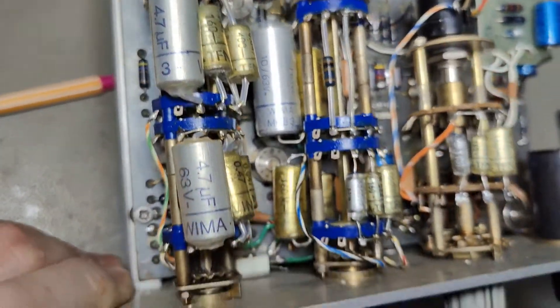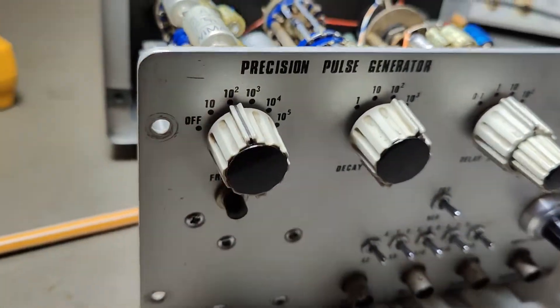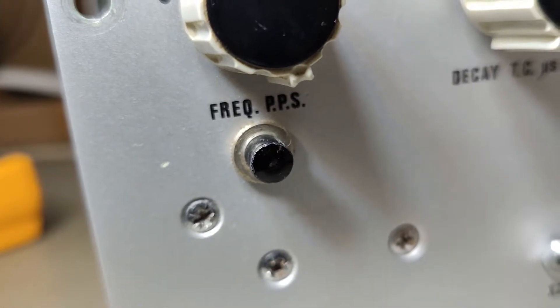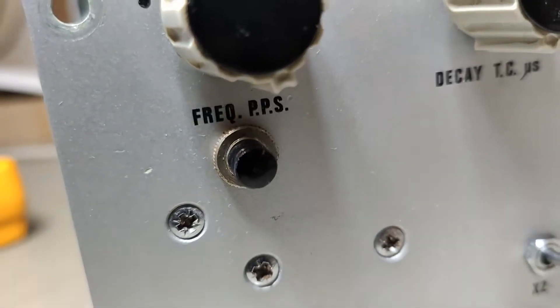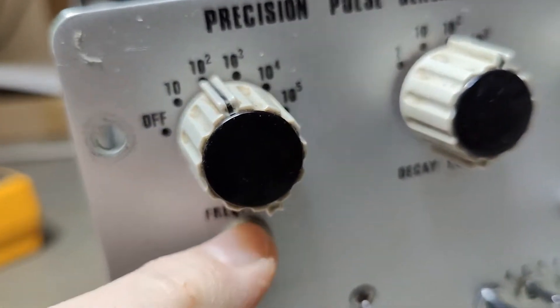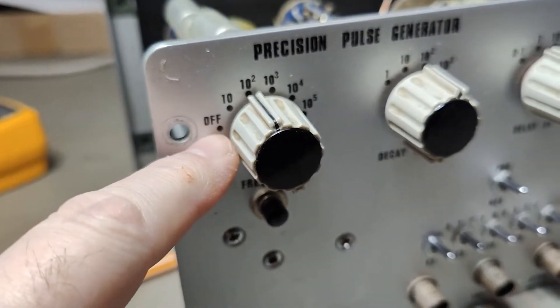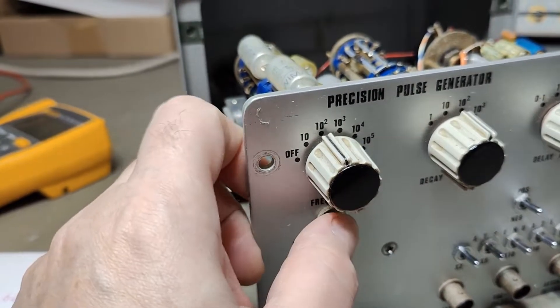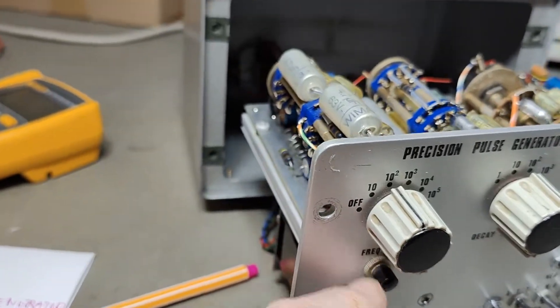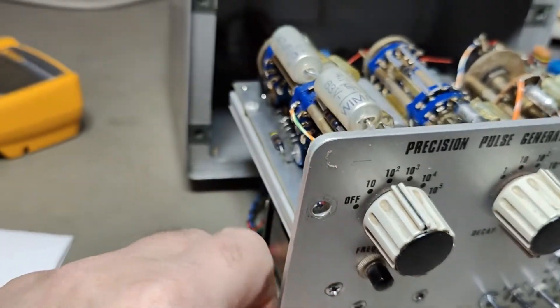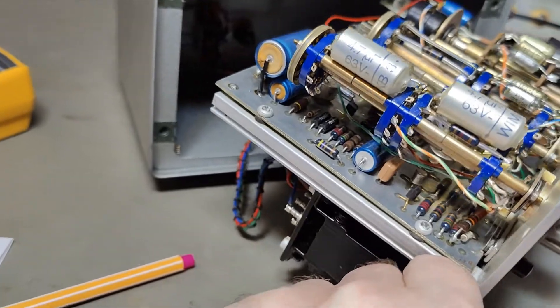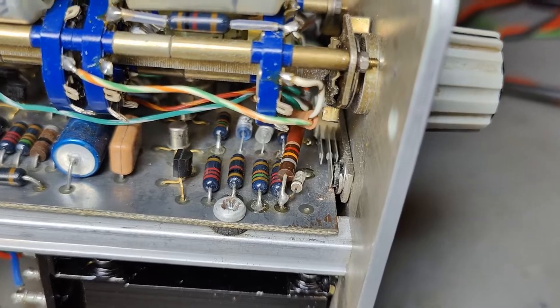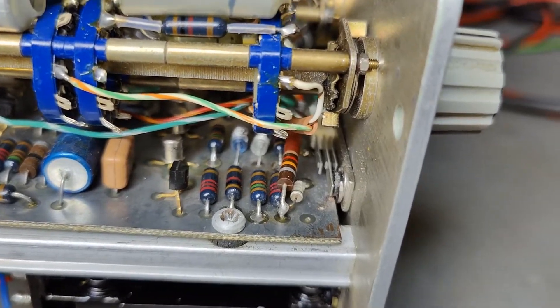This switch here at the front, frequency PPS something, whatever that is, it's probably a manual start. When you're in off, I would expect you could hit this one and then it will make one pulse. So this is probably a manual pulse. This one feels like it's not working, and I figured out exactly why.